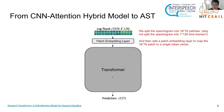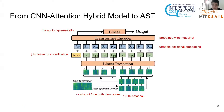In order to do that, we split the spectrogram into 16 by 16 patches with overlap, and convert them to a 1D vector using a linear projection layer. We also add the CLS token and the positional embedding. We then input the token vectors to the ImageNet-pretrained transformer encoder, and use the output of the CLS token as the audio representation, and finally use a linear layer to classify the spectrogram.